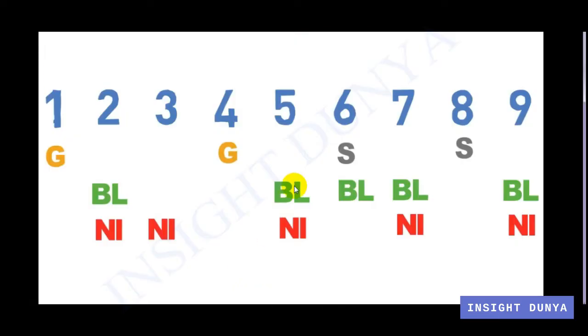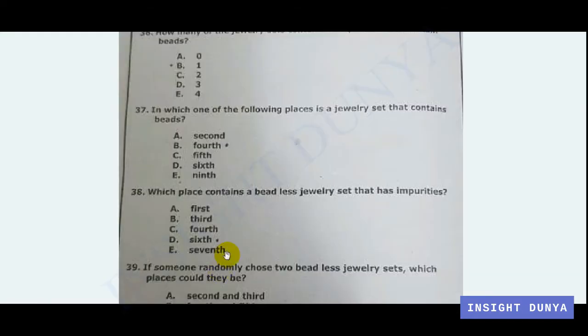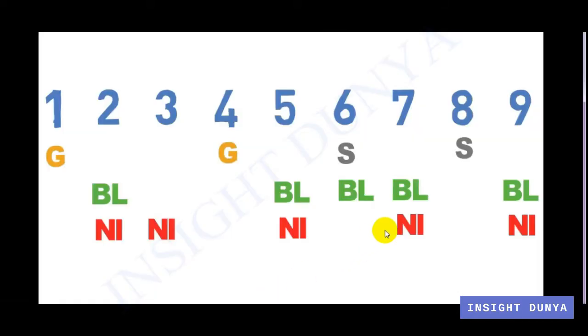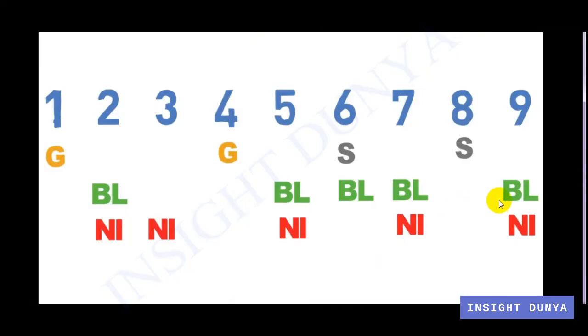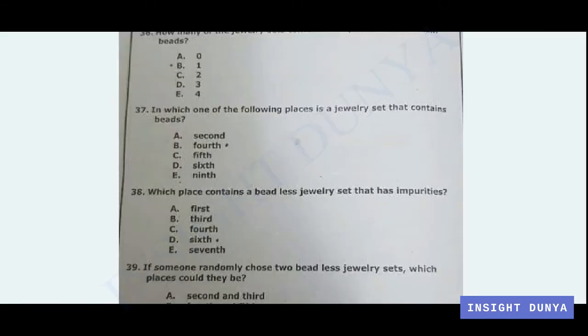Option C is the fifth position — fifth is beadless. Option D is sixth — sixth is also beadless. Similarly, ninth is also beadless. So only option B, the fourth position, is the correct answer.